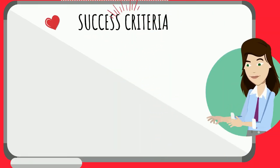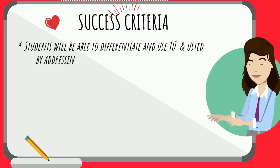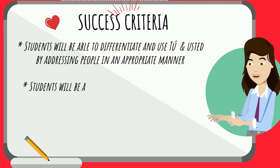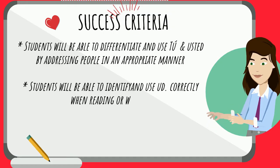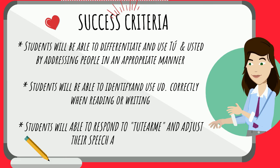The success criteria is as follows: students will be able to differentiate and use tú and usted by addressing people in an appropriate manner. You can't call everybody tú, just as you can't call everybody usted. We are going to learn how to differentiate and decide when to use each of them. Students will also be able to identify and use usted correctly, particularly when reading or writing, and respond to 'tutearme' — the secret word for today — and adjust their speech accordingly.